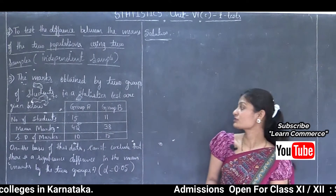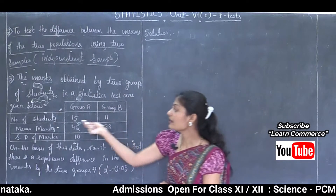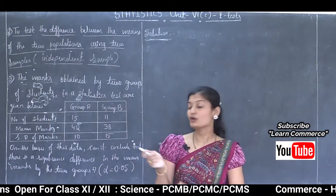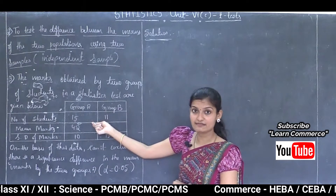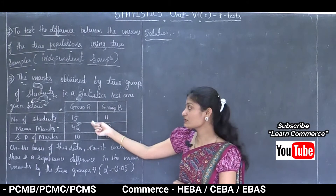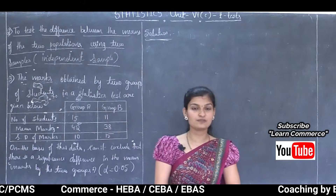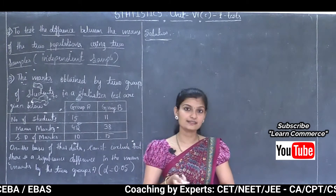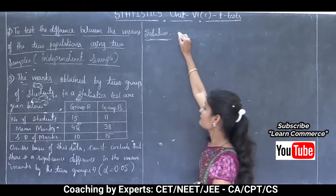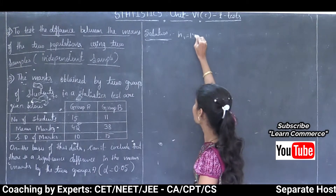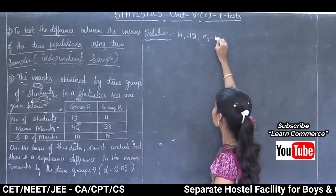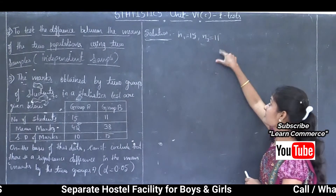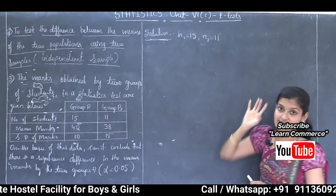Now let us see the given solutions. Here number of students is given — that is sample size. There are two sets of observations, so sample size is denoted by N1 and N2. Here N1 is 15 and N2 is 11. Since 15 and 11 are both less than 30, this is a T-test.